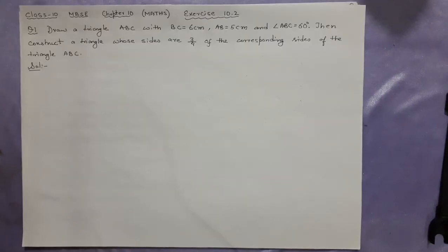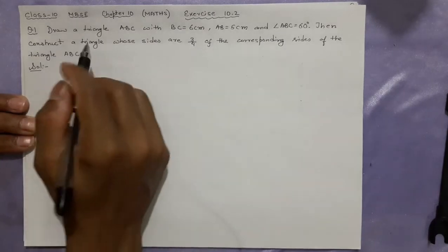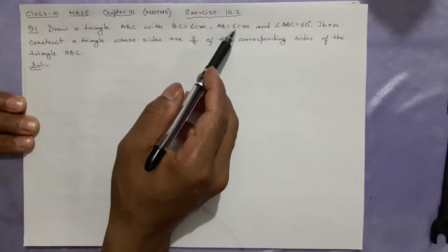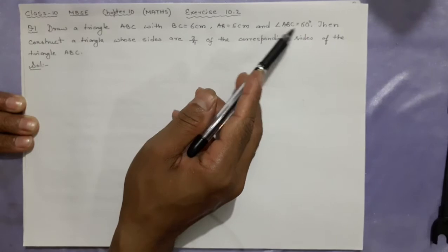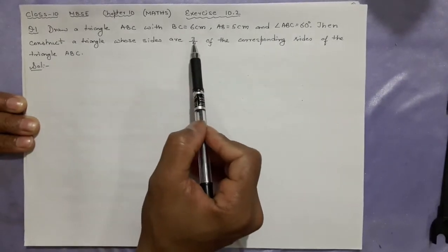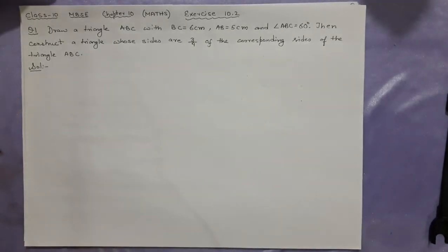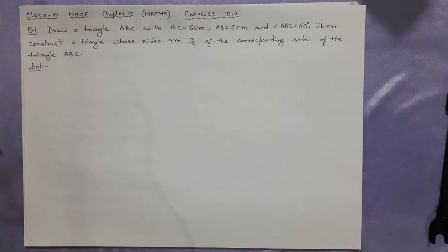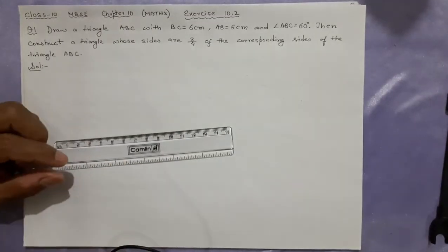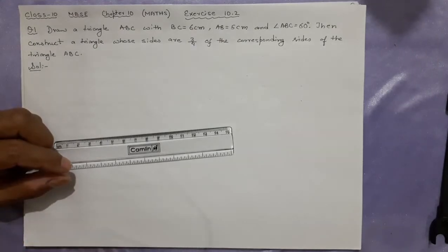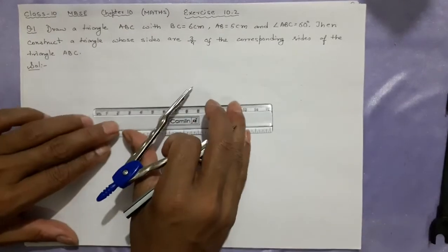The question is: Draw a triangle ABC with BC equal to 6 centimeters, AB equal to 5 centimeters, and angle ABC equal to 60 degrees. Then construct a triangle whose sides are three-fourths of the corresponding sides of triangle ABC. This is similar to example one from our previous video, but here the difference is that you have to draw the first triangle before drawing the similar second triangle.